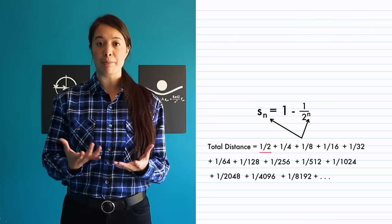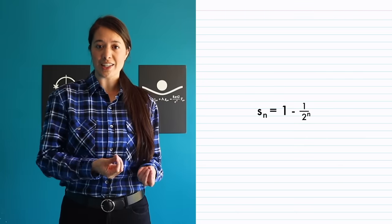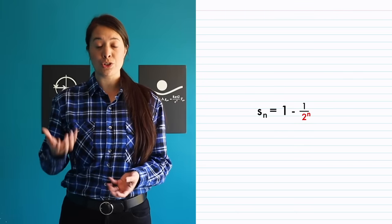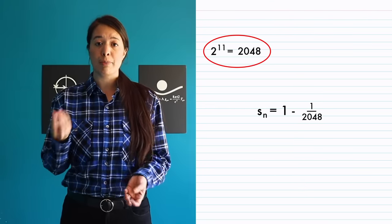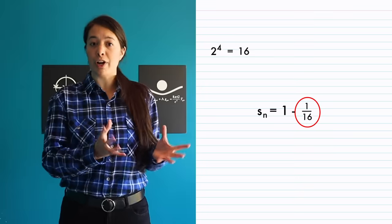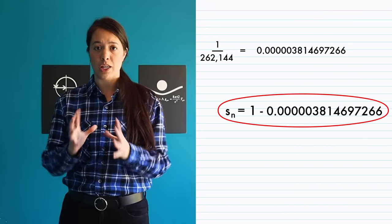The n stands for the number of fractions or terms in our sum. The more terms there are, the larger n gets. Which means that this term here, 2 to the power n, gets really, really large. The bigger 2 to the power n gets, the smaller the fraction gets. And the smaller the fraction gets, the closer the sum gets to equaling 1.